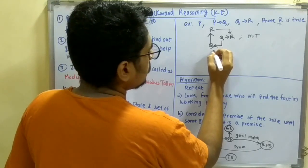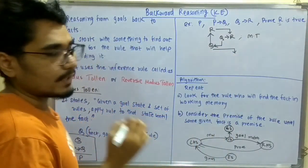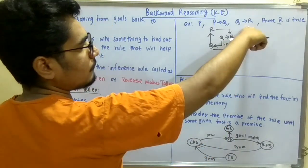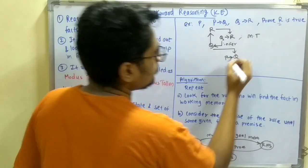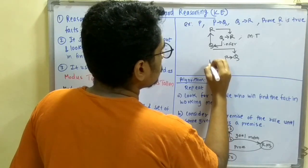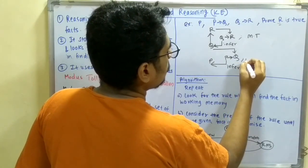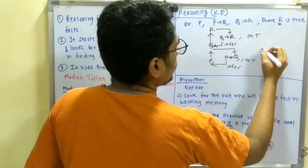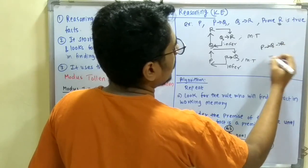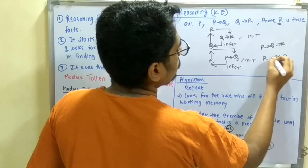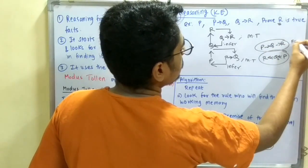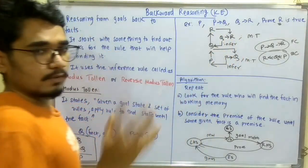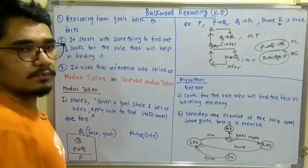With Q now inferred and placed in the working memory, we apply Modus Tollens again using the rule P derives Q, and from that we infer P. The backward chain is: R is the goal, Q is inferred from R using Q derives R, and P is inferred from Q using P derives Q — going backwards: R, Q, P. This contrasts with forward chaining which goes P, Q, R.